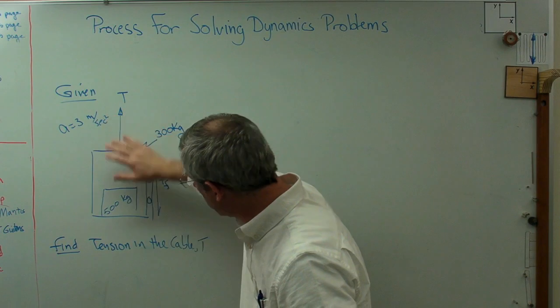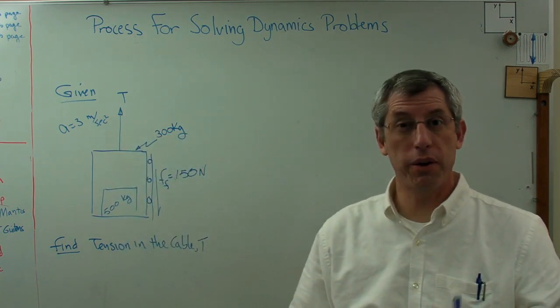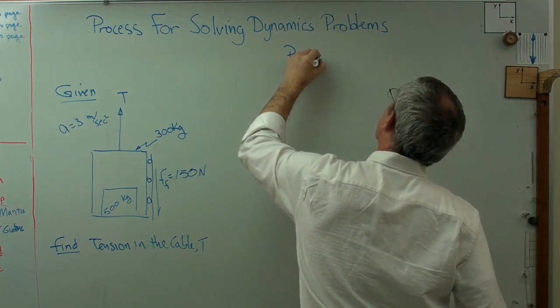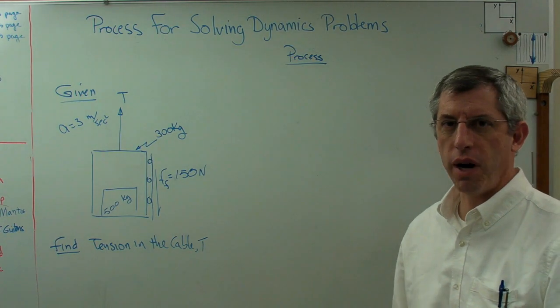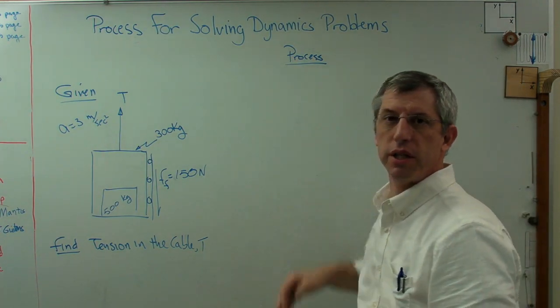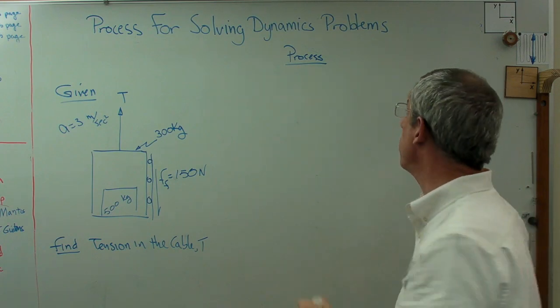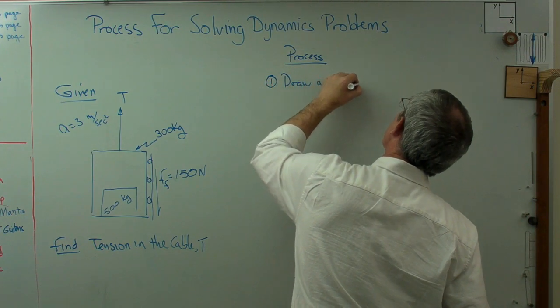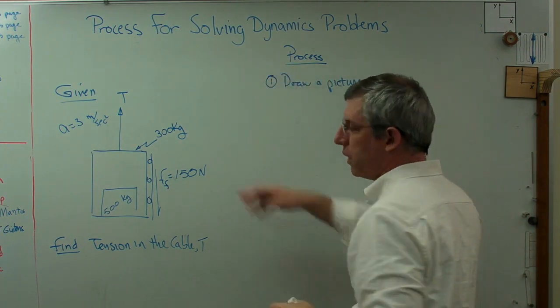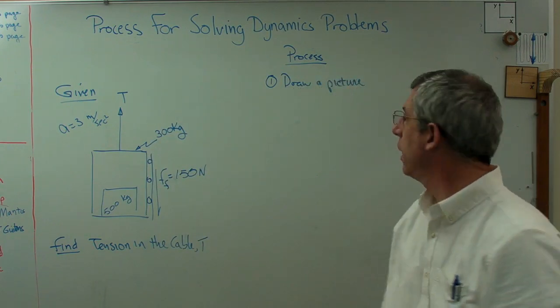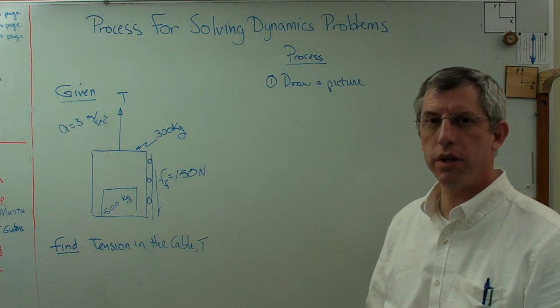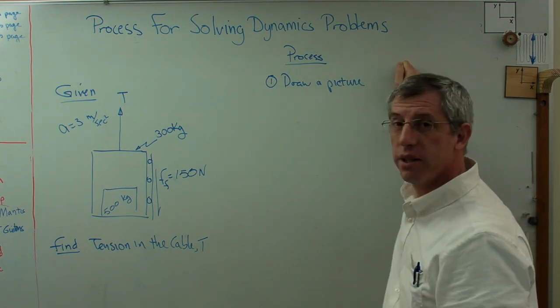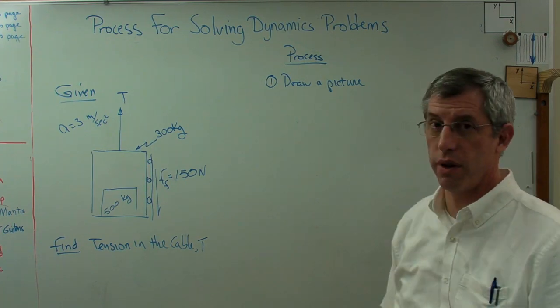Before we start crunching numbers here, let's talk a little bit about the procedure for solving a problem like this. I'll call it maybe process. Engineers, engineering technology people, we're process people. We need to know the process for things so we can work through problems and get the right answer every time. So the very first thing to do is obviously draw a picture. And I'm not talking about a free body diagram. I'm just talking a picture of what's going on. This is the picture of what's going on. If you can't draw a picture of the problem, you probably don't understand it.